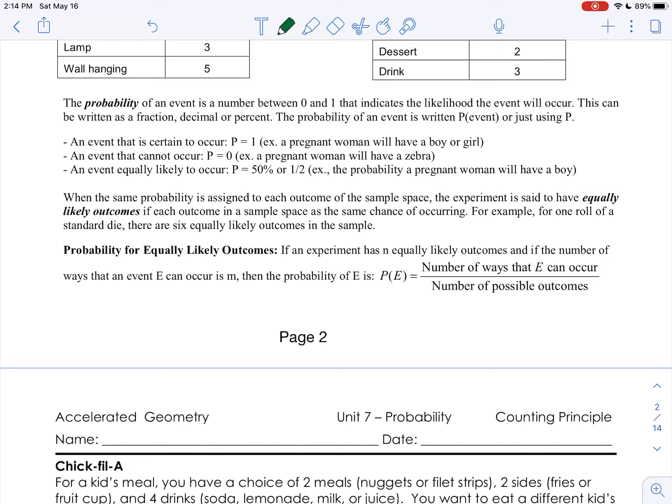However, if we're looking at just what the probability is of the woman having a boy, then that percent would be 50%, because that's equally likely that she would have a boy or a girl.